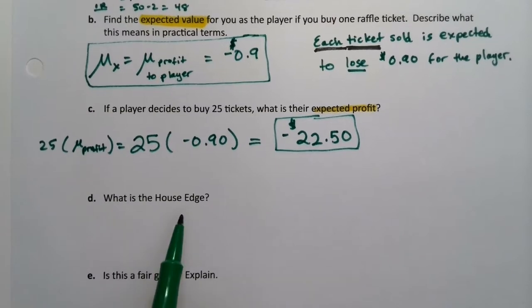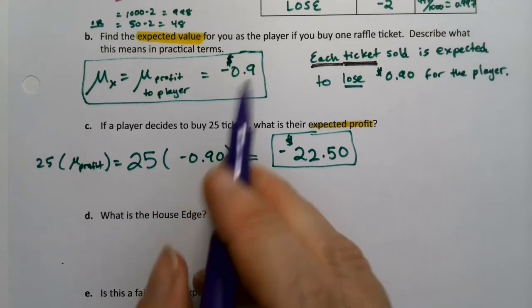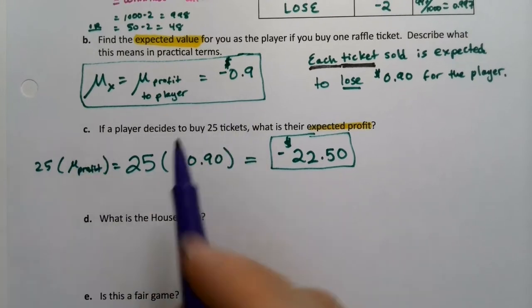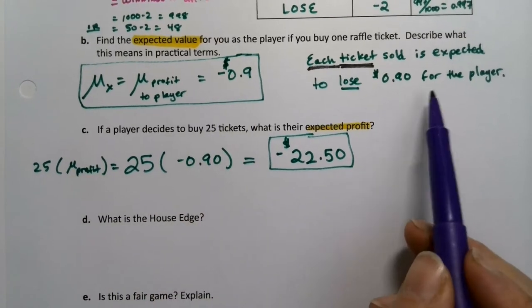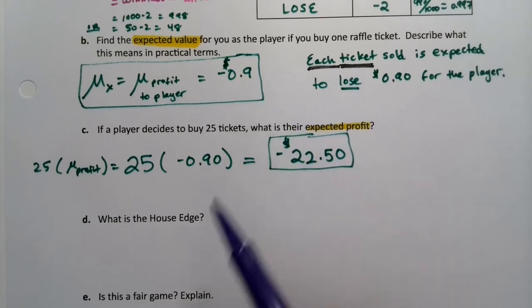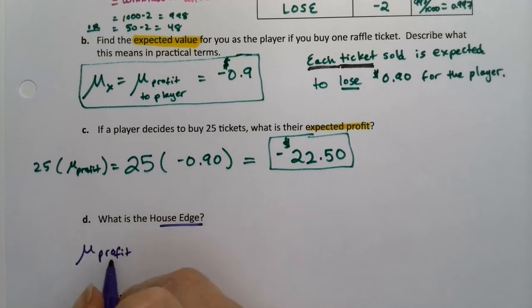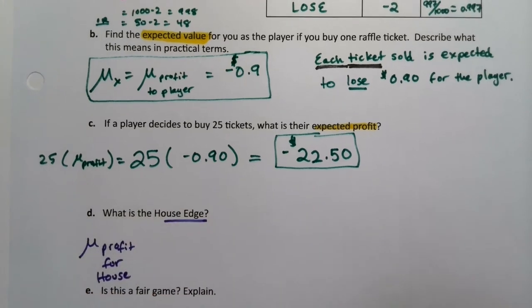Now the house edge. So if you look back up here at the profit for the player, you're losing 90 cents for each ticket that you buy. So who are you losing it to? You're losing it to the house. So the house edge is the mean of the profit for the house.